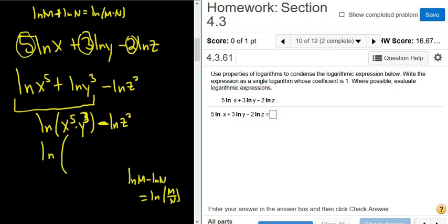So this is ln of, it's 1 ln, really important that it's written correctly: x to the 5th y cubed over z squared. And so that's the answer. Let's type it in.